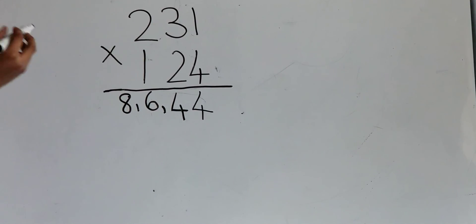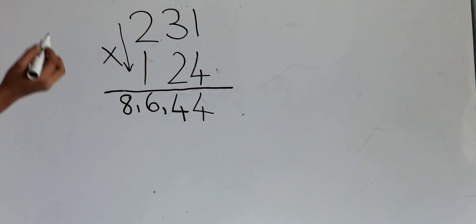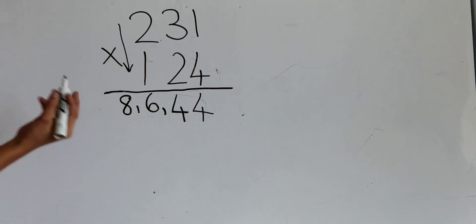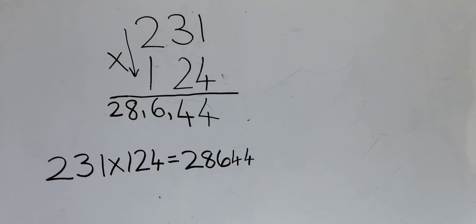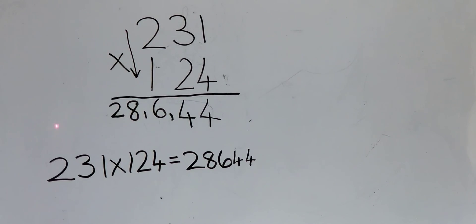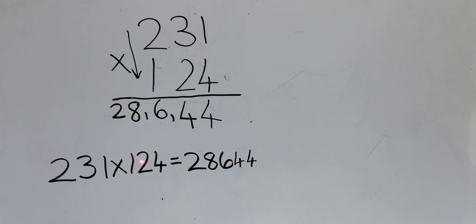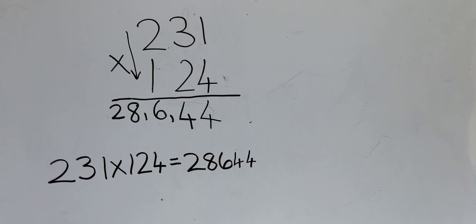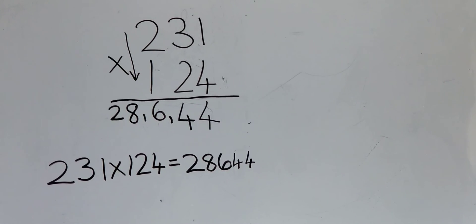Now multiply 2 times 1. 2 times 1 is 2. Write 2 over here. The answer for 231 times 124 equals 28644. Thanks for watching.